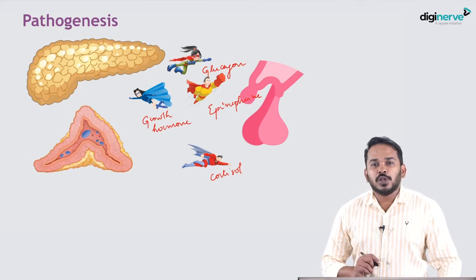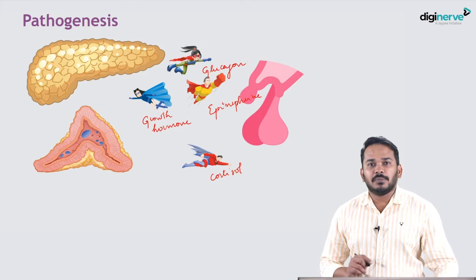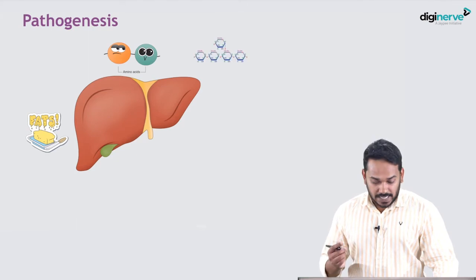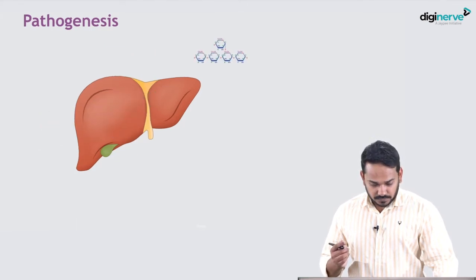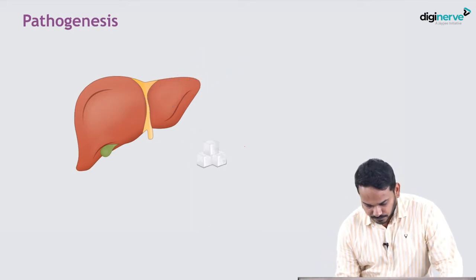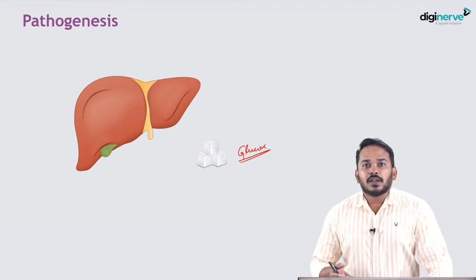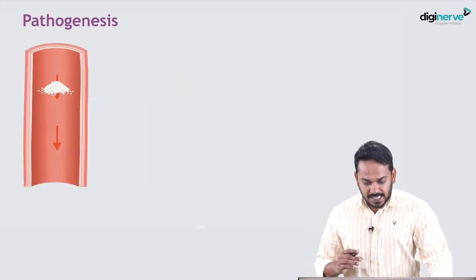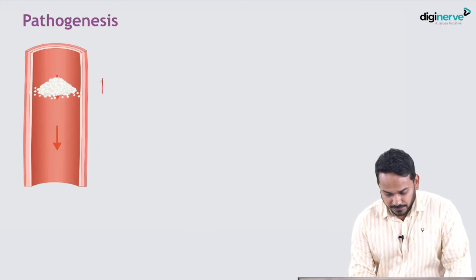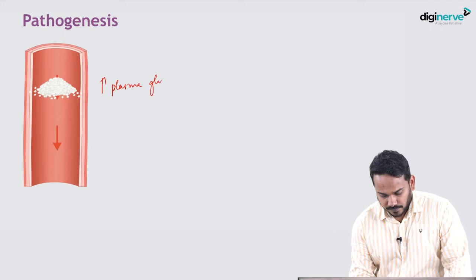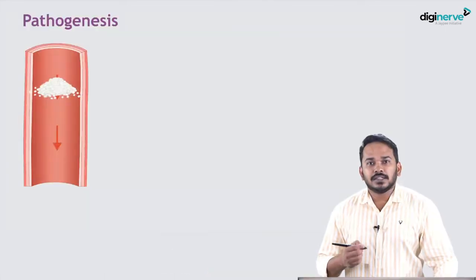These stress hormones produce changes in normal glucose metabolism. They stimulate the synthesis of glucose from fats, amino acids, and glycogen. So glucose is available in high amounts in the plasma, and the body is making more glucose from fats, amino acids, and glycogen, increasing plasma glucose levels considerably. But still, with reduced insulin, cells are essentially in starvation.